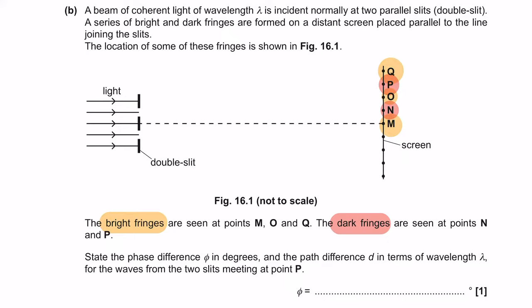At point P, labelling each fringe: M is the central maxima, N is the first order minima — that's 180 degrees phase difference and half lambda path difference. For a minima, the phase difference goes up in odd multiples of 180 degrees. O is the first order maximum at 360 degrees.